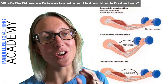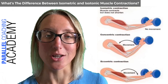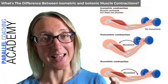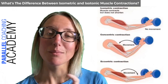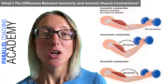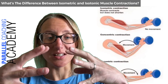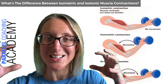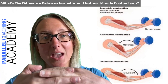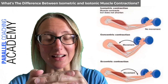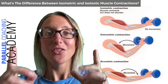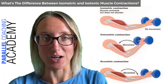Let's start with an isometric contraction. When you break it down, 'iso' means the same and 'metric' means length, so it literally means same length. The actin and myosin are still moving across each other, the muscle is still activated, but if the origin doesn't get any closer or further away from the insertion, then it's an isometric contraction.